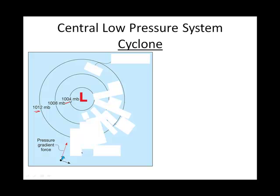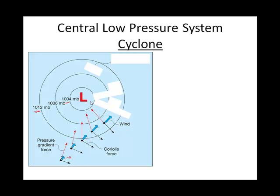Notice that the Coriolis force is going to deflect that air to the right. You can see the deflection to the right — more and more deflection to the right — until at the point where the wind is flowing parallel to the isobars. At that point we have gradient wind, and it's kind of in a groove, staying between those isobars.